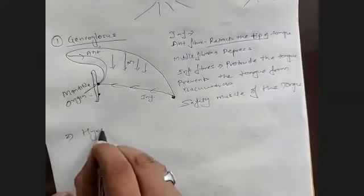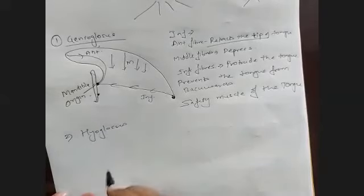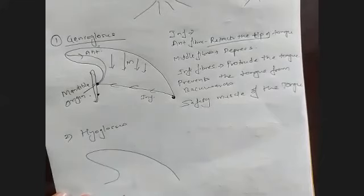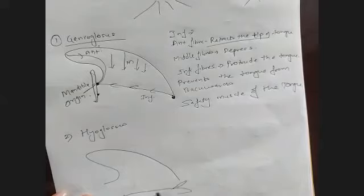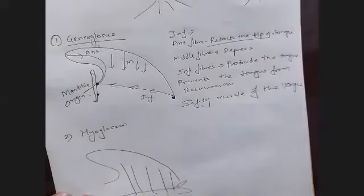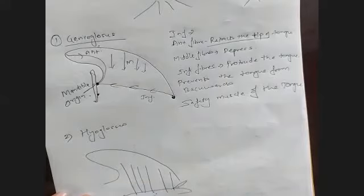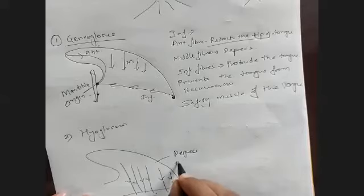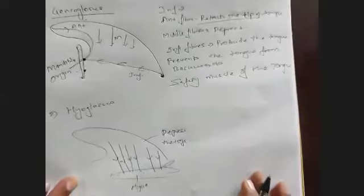The second muscle is hyoglossus. If you see it from the side of the tongue, here is the hyoid bone with smaller and greater cornu. The hyoglossus fibers take their origin from the hyoid and go to the tongue. Therefore, whenever it contracts, it will depress the tongue.